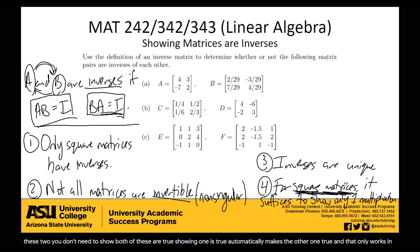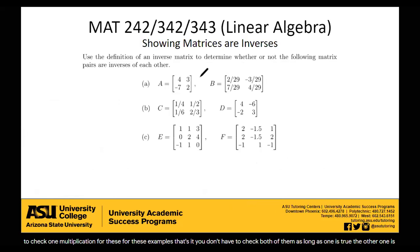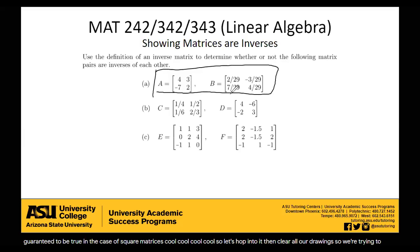Which is fine because square matrices are the only ones that have inverses. So really we just have to check one multiplication for these examples. You don't have to check both of them. As long as one is true, the other one is guaranteed to be true in the case of square matrices. So let's hop into it then. We're trying to show whether or not these pair of matrices are inverses. So what do we do? We're going to multiply them together and we're going to see if we get the identity out of it.